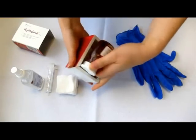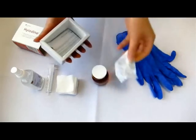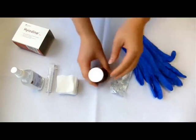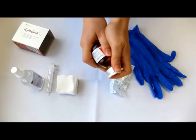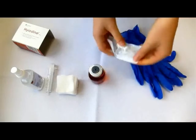Hyodyne package contains one bottle of Hyodyne and a spike. Take the white plastic lid off the bottle and remove the spike from the foil.